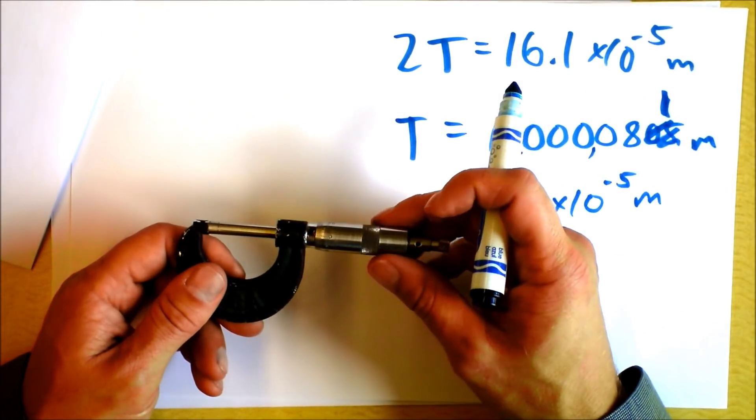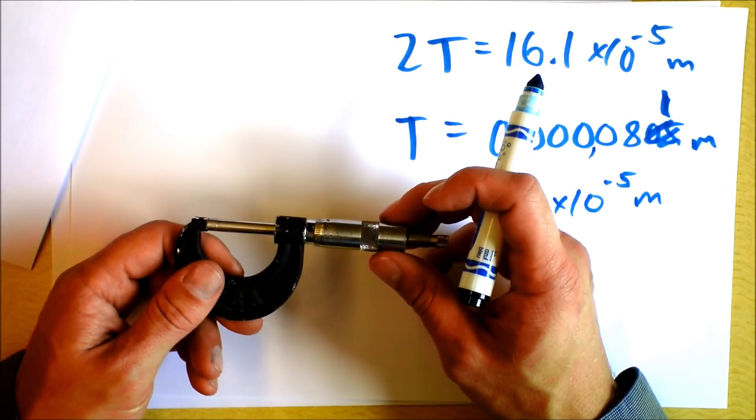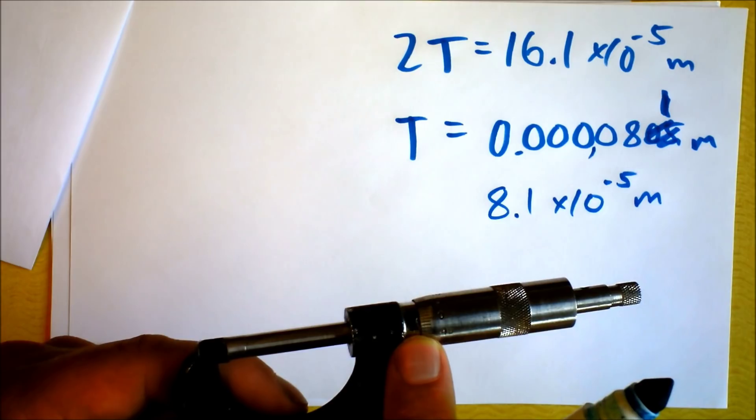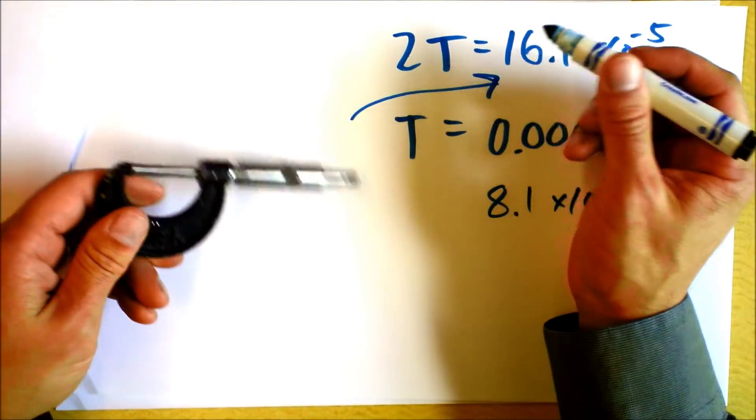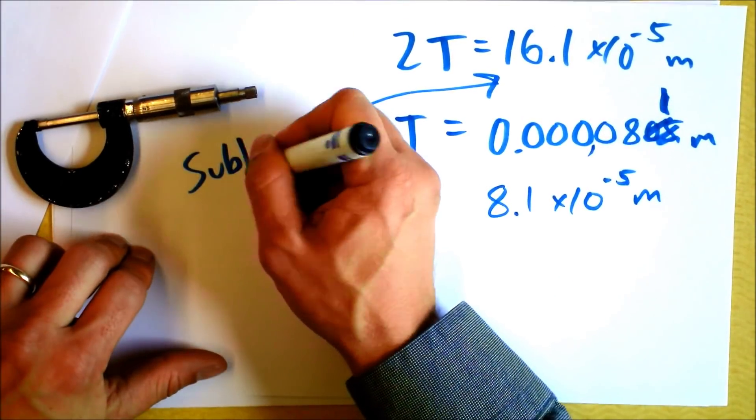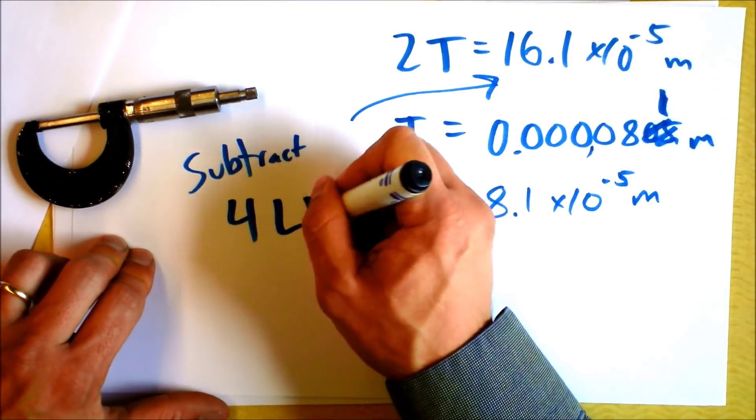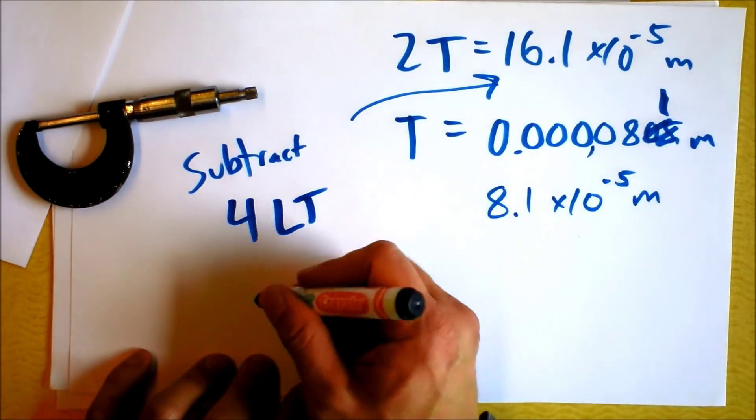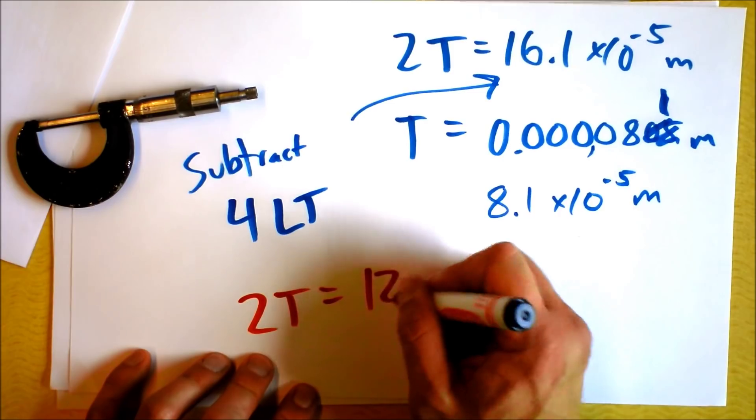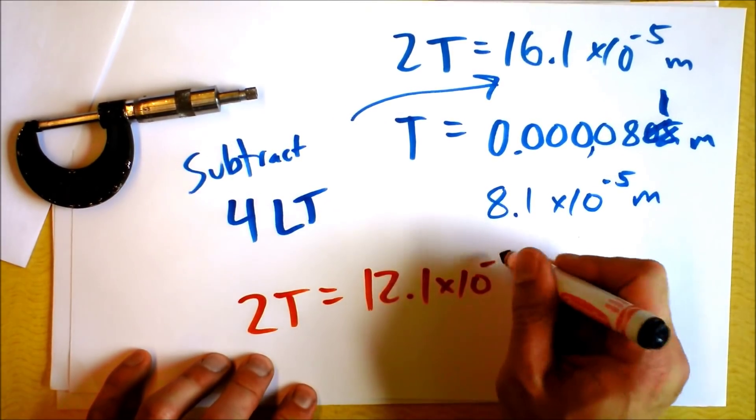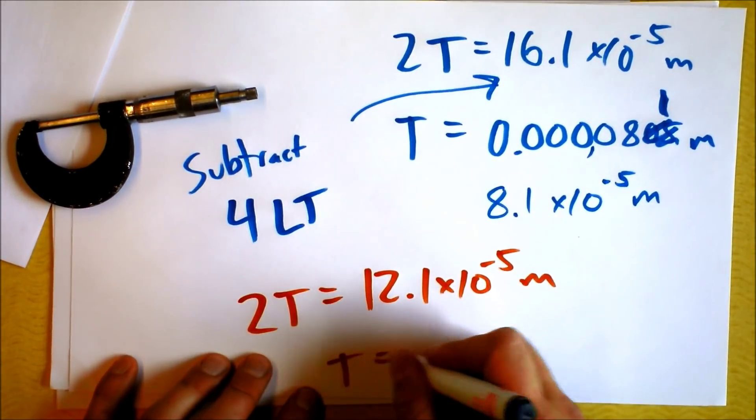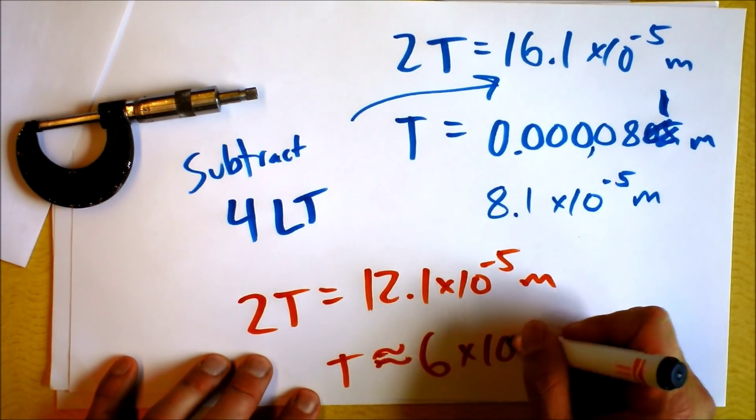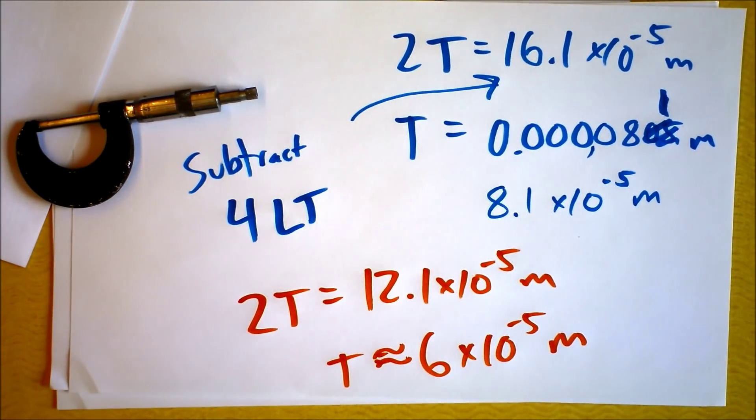But there's a small problem. I'm going to close this down and I'm going to show you that it goes beyond zero. It actually went beyond zero by four little ticks. So I should take this number right here and I should subtract four little ticks and then divide by two. What will that give us? It says that two times the thickness is 12.1 times 10 to the negative fifth meters. And then the actual thickness is just about six times 10 to the negative fifth meters. So that's how thick paper is. That's cool.